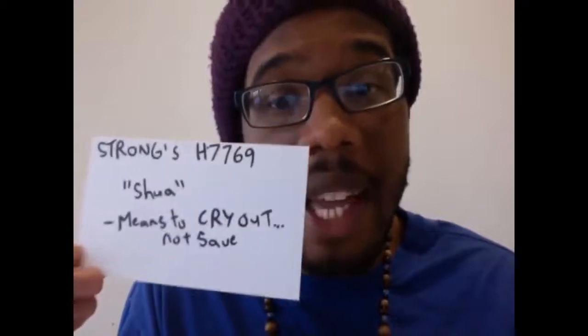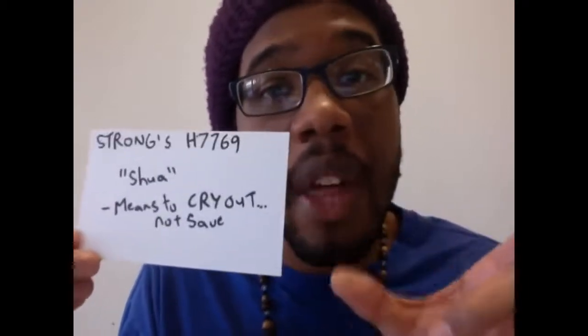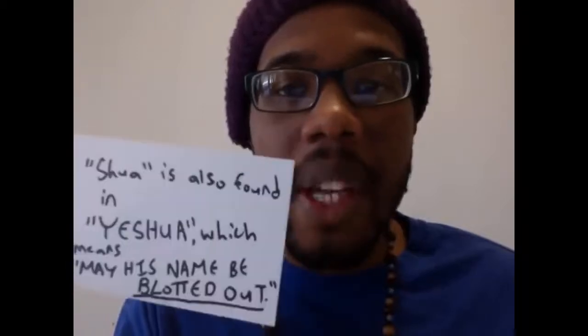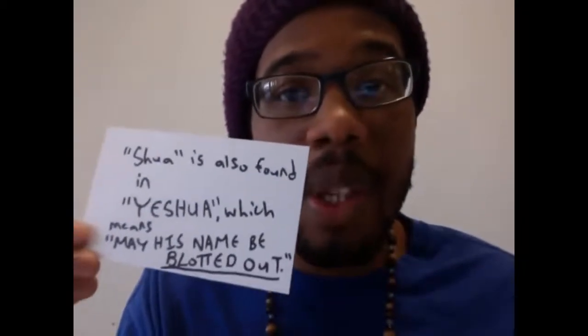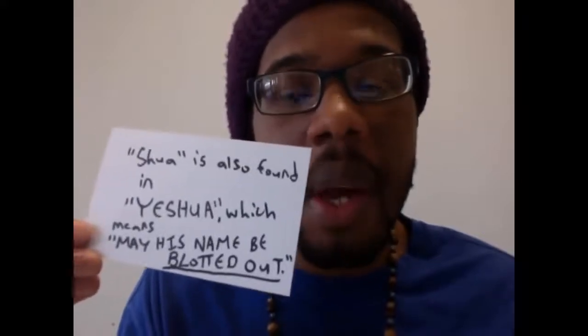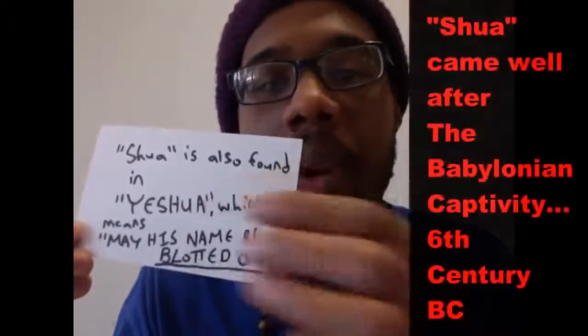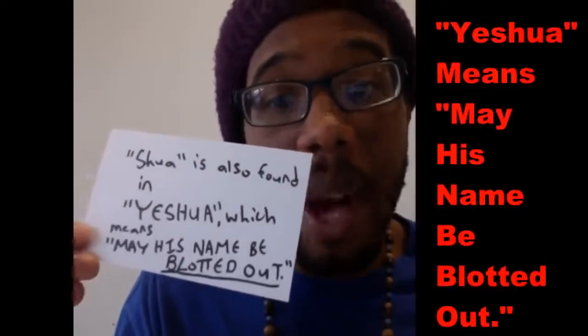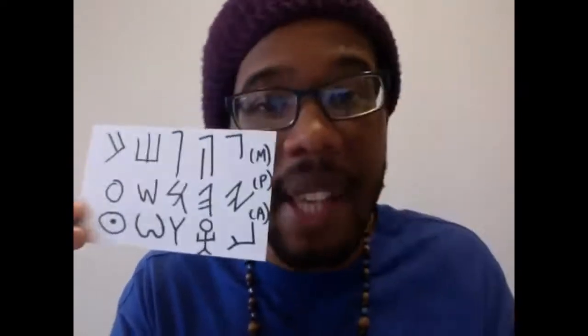The 'shua' root — Strong's H7769 — actually means 'to cry out,' not 'to save.' So Yahushua would mean 'Yahuwah cries out,' not 'Yahuwah saves.' Additionally, the 'shua' root is found in the name Yeshua, commonly used by Jewish people, and in etymology this word comes from post-Babylonian captivity and actually means 'may his name be blotted out' — which is why I do not use 'shua.' So the name of our Mashiach is Yahusha, written in modern, Paleo, and ancient Hebrew, all with the exact same five characters and pronunciation.